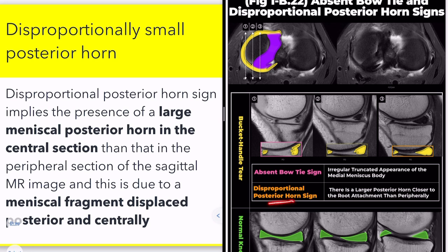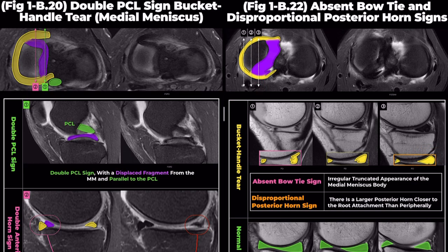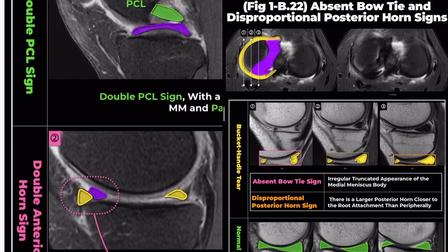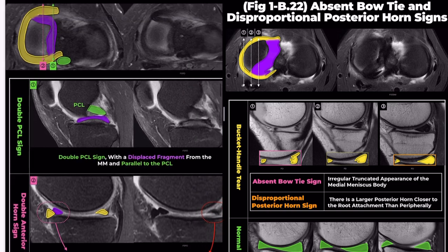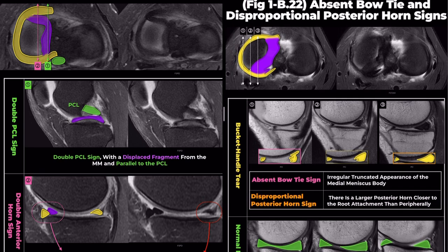Next, we'll explore the flipped meniscus sign and disproportionately small posterior horn sign. This sign indicates a larger meniscal posterior horn in the central section than in the peripheral section of the sagittal MRI image, resulting from a meniscal fragment displaced posteriorly and centrally. When bucket-handle fragments primarily involve the anterior or posterior body segment of the meniscus, they displace and lie over the posterior or anterior meniscus, giving a doubled-up appearance or a disproportionately large horn. This is termed the flipped meniscus sign or the flipped fragment sign.